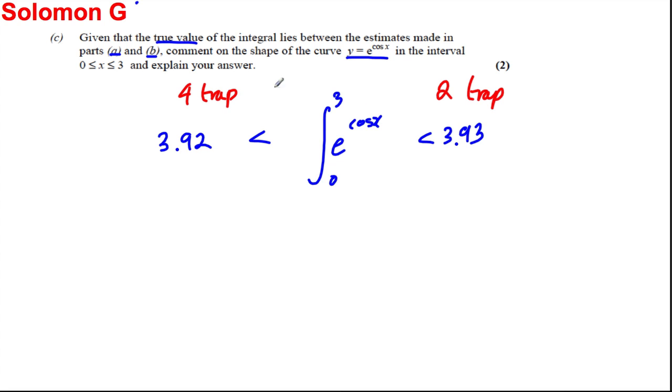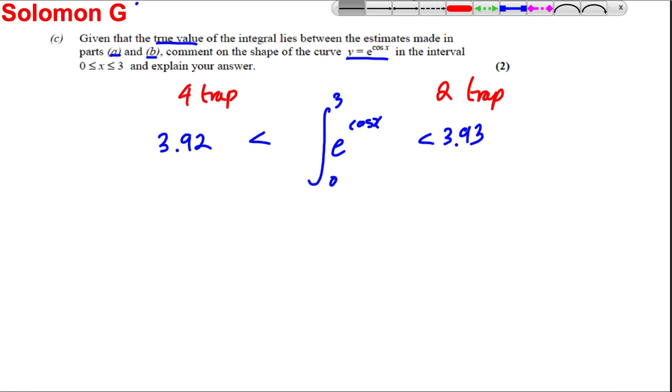Now, usually we thought that the more trapezia you use, the more accurate the answer gets. However, they're both the same distance away, and it's not for sure that this is more accurate or closer to the real answer than this one. So what could be going on? This requires a little bit of explanation. It's quite tricky.